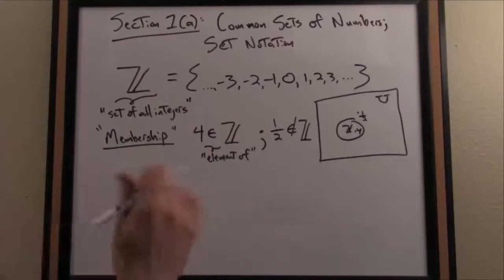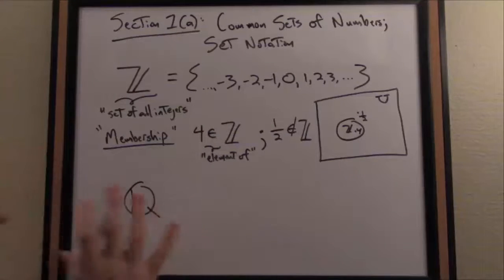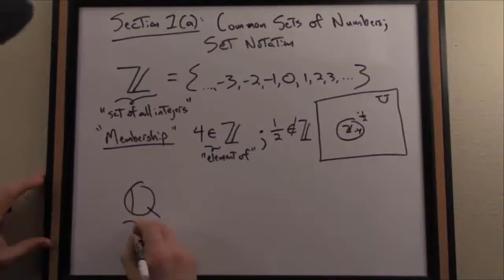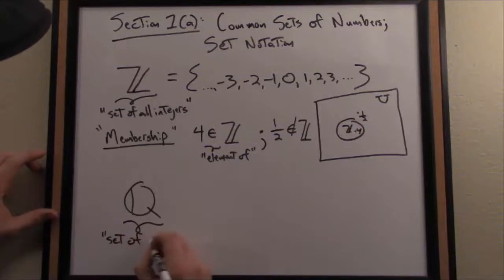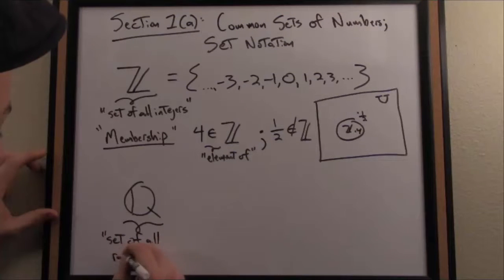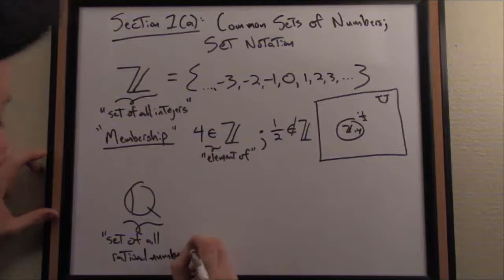That leads us to our next kind of natural set of numbers. Think of Q as standing for quotient. Capital Q is concise notation standing for what's usually referred to as the set of all rational numbers.